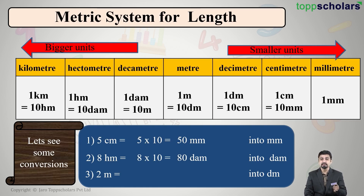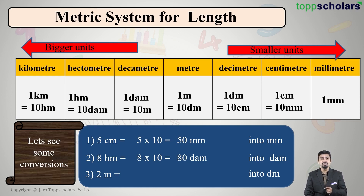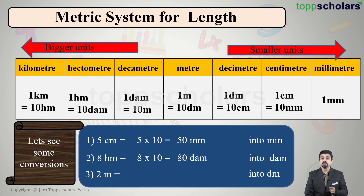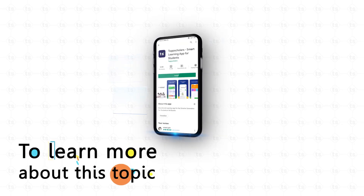Next conversion: 2 meters into decimeters. From the table, 1 meter is 10 decimeters, so 2 meters equals 2 × 10 = 20 decimeters. To learn more about this topic, download the Top Scholars app.